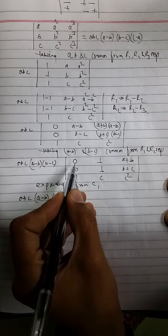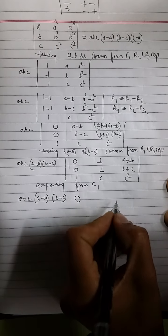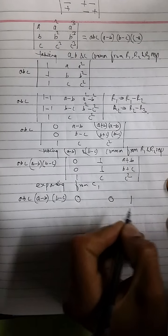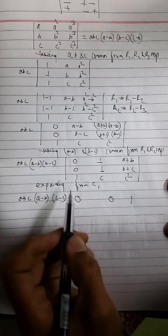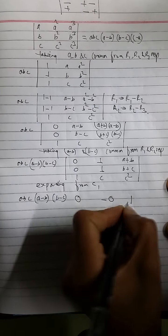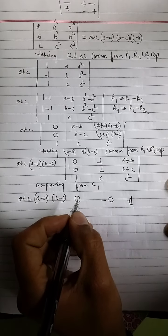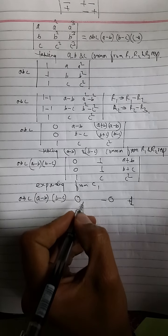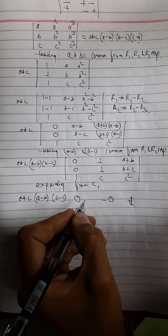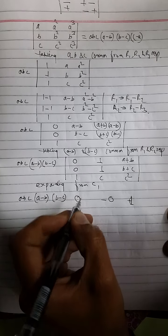So, elements of first row, first column are 0, 0, 1. So with regards of plus, minus, plus. And what elements are to be multiplied with these? Which determinants are to be multiplied with these elements? Let's see.